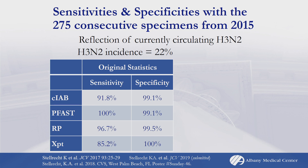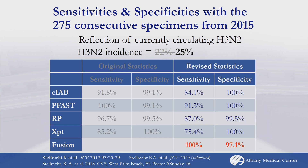Where we previously thought the incidence of influenza in this group was 22%, we now know it's 25%. That changes the performance statistics of the other assays — their specificity improved because they no longer had false positives — but their sensitivity decreased, since the Fusion was able to detect all true positive samples while maintaining very good specificity.